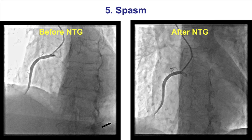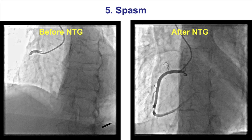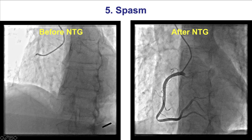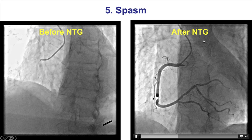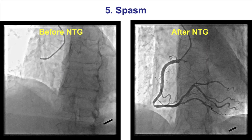Spasm is another cause of acute vessel closure. This is a patient with severe lesions in the distal RCA and posterolateral vessel. All these lesions disappeared after intracoronary nitroglycerin. That emphasizes the point that nitroglycerin should be given in all patients before coronary angiography unless there is a contraindication such as hypotension.